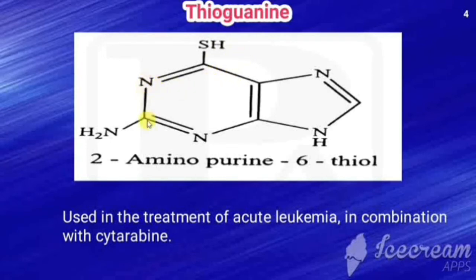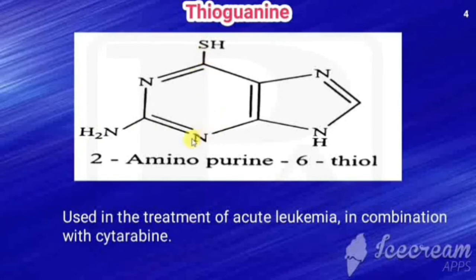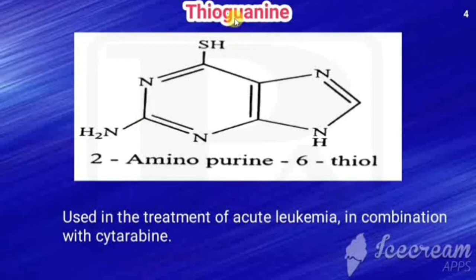The numbering of the purine ring goes 1 through 9. At the second position there is an amino group, and at the sixth position there is SH. The chemical name is therefore 2-aminopurine-6-thiol. The difference between 6-mercaptopurine and 6-thioguanine is that thioguanine has an extra amino group at the second position, whereas 6-MP does not. Guanine has a hydroxy group at the sixth position, whereas 6-thioguanine has an SH group at the sixth position.